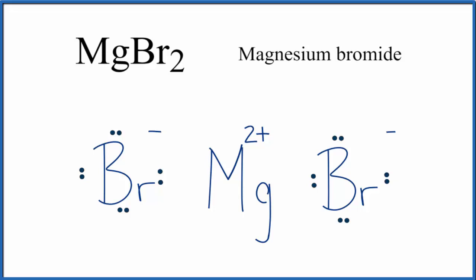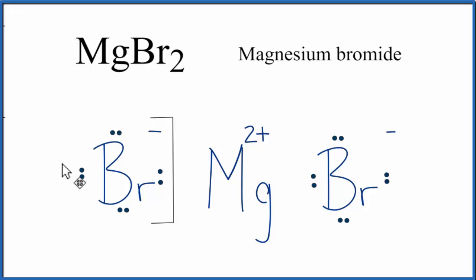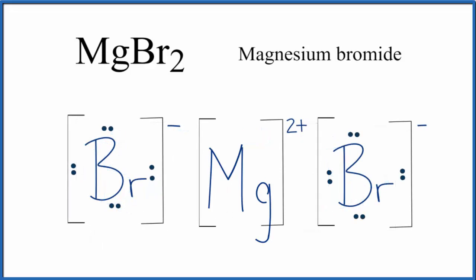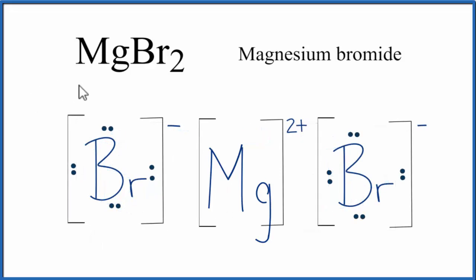We need to put brackets around the bromide ions to show that the electrons have been transferred and are now with the bromine — that they aren't shared like in a covalent compound. Sometimes you'll also see brackets around the positive ion. This makes the Lewis structure for MgBr₂, magnesium bromide.